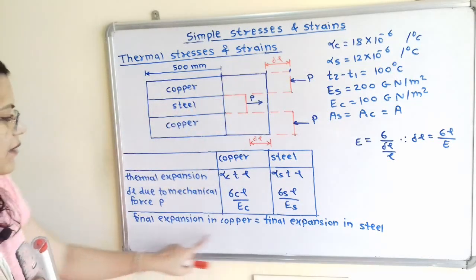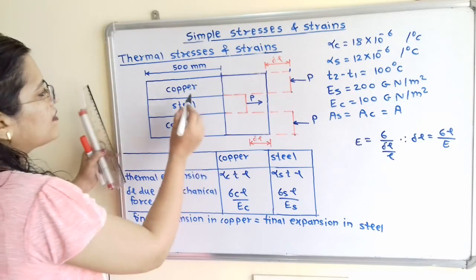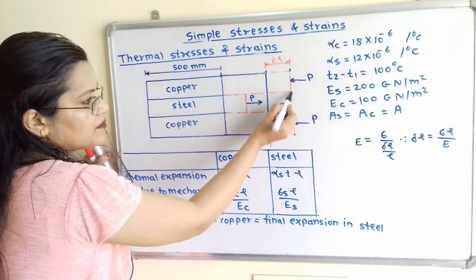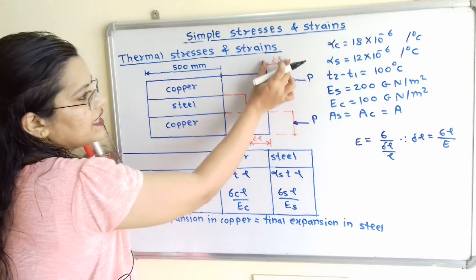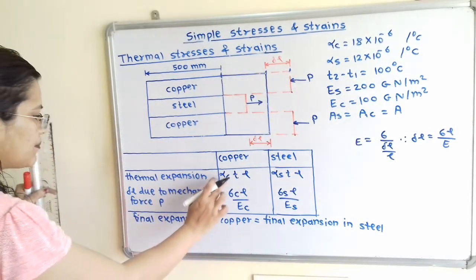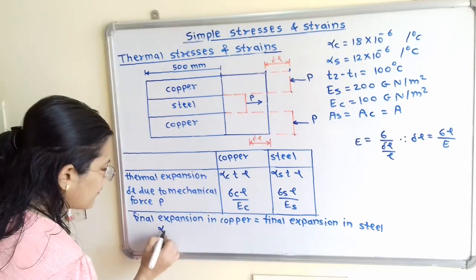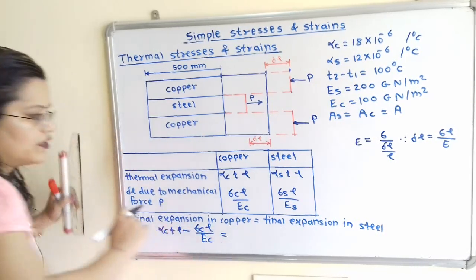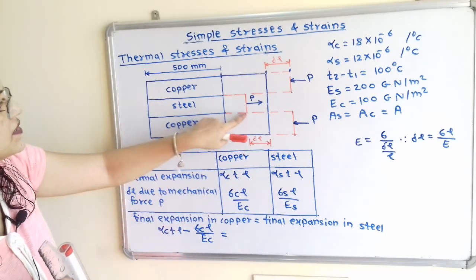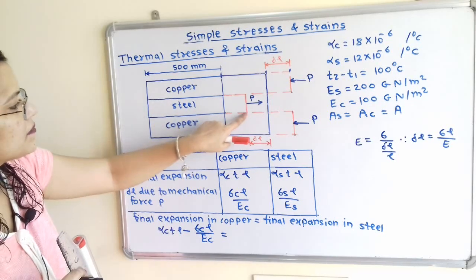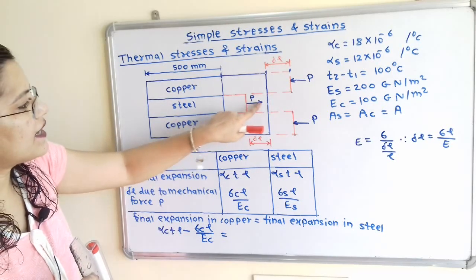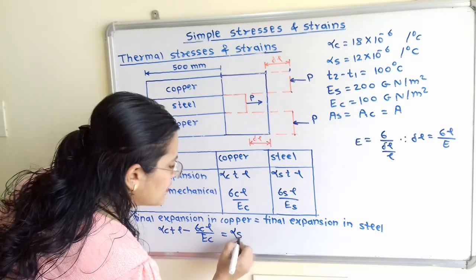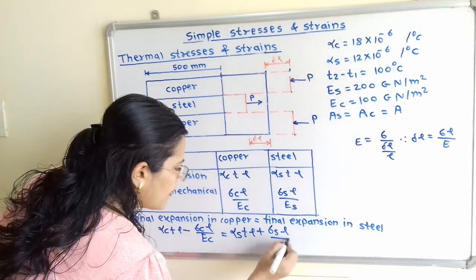With reference to the diagram, the final expansion in copper is: thermal expansion minus the decrease due to compressive force, that is α_C · T · L − σ_C · L / E_C. The final expansion in steel is: thermal expansion plus the increase due to tensile force, that is α_S · T · L + σ_S · L / E_S. Setting these equal gives our compatibility equation.